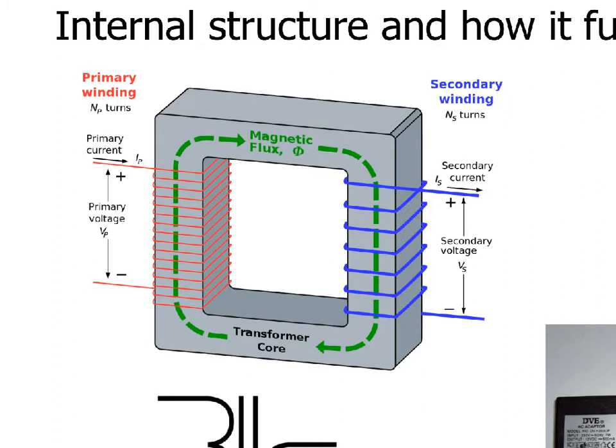You have what's called the primary input or primary winding of the transformer, and then you have a secondary winding of the transformer. Your alternating current comes in on the primary side, and it goes out on the secondary side. So I mentioned that it's alternating current. Of course, you can see it's coiled here. There's a coil of wire, and then it comes back out. This coil of wire is going to produce a magnetic field when current is flowing through it.